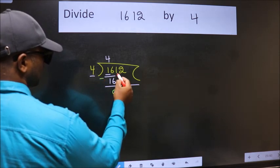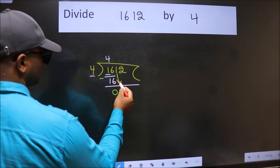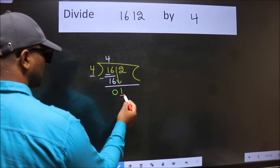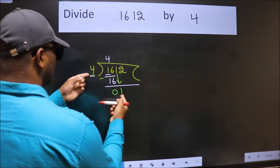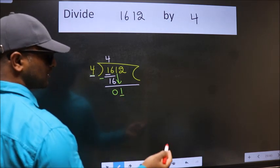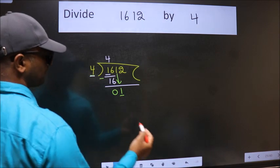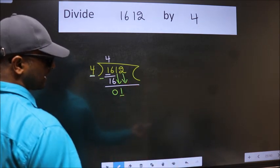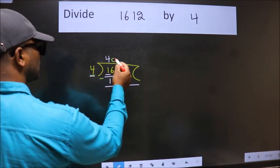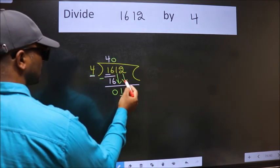After this, bring down the beside number, so 1 down. Now here we have 1. 1 is smaller than 4, so we should bring down the second number. And the rule to bring down the second number is put zero here, then only we can bring this number down.